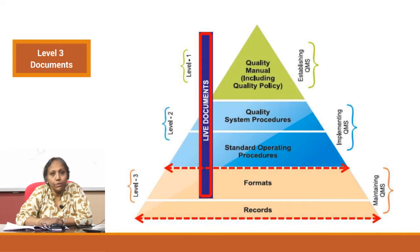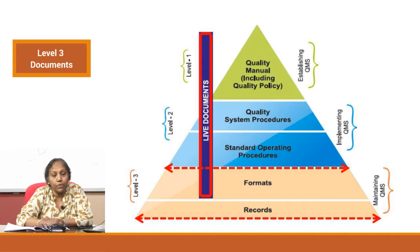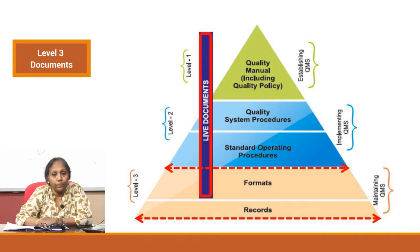Hello again. In the previous videos, we talked about Level 1 and Level 2 documents. We learned that Level 1 is to establish a QMS, and Level 2 is to implement the QMS established by management. Level 1 documents are the responsibility of management, Level 2 documents are the responsibility of the technical supervisory staff, and Level 2 documents should be very accurately defined so that frontline lab workers know how to do each activity accurately.